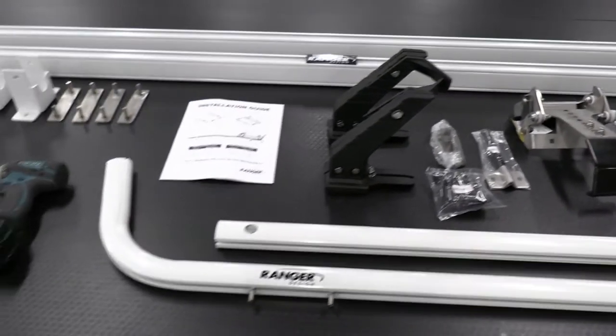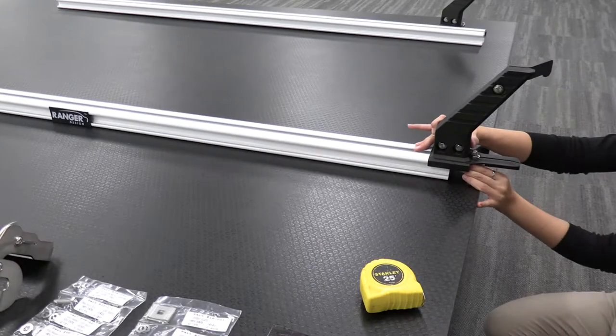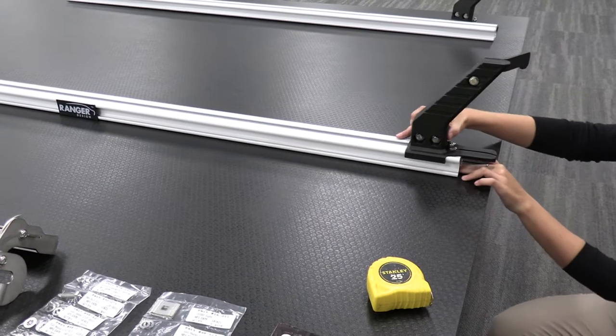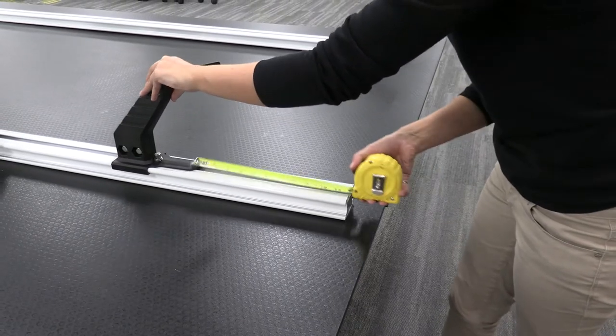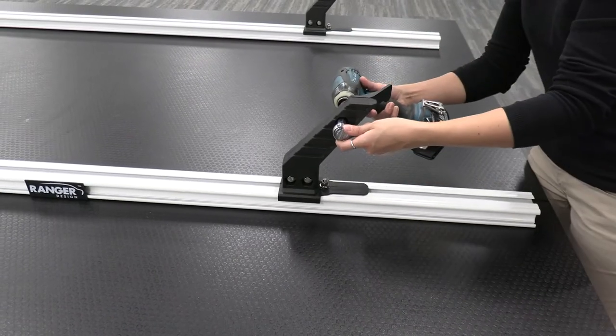Lay out all your tools and ensure you have all the necessary parts. Slide the ladder hook onto the rear crossbar first and position it 12 inches from the end. Tighten the bolts to secure it in place.